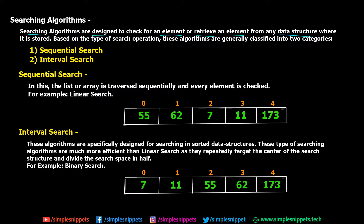Generally, based on the type of search operation, these algorithms are classified into two categories. The first is sequential search, which we are going to be looking at, and the second one is interval search.